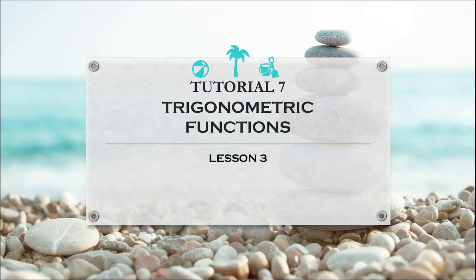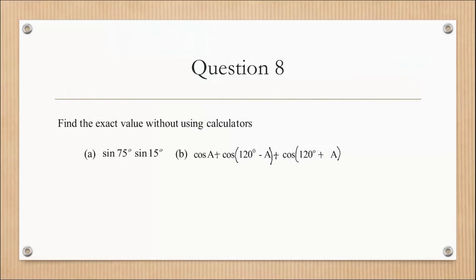Assalamualaikum and hi, welcome to lesson 3 of tutorial 7 on trigonometric functions. We are going to discuss question 8e: find the exact value without using a calculator — sine 75 degrees times sine 15 degrees.